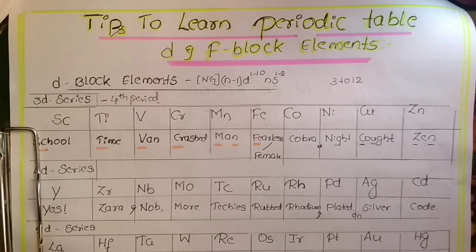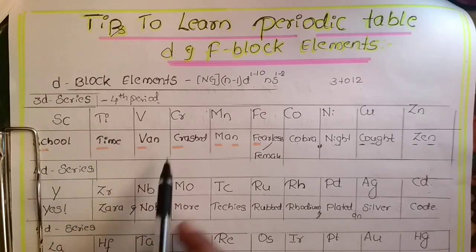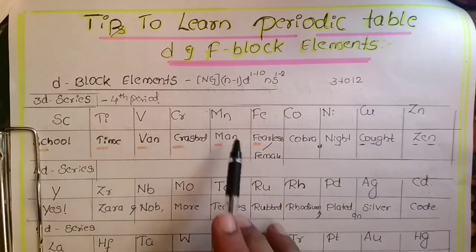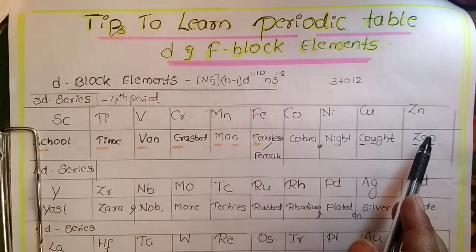Here the 3d series elements include scandium, titanium, vanadium, chromium, manganese, iron, cobalt, nickel, copper, and zinc.